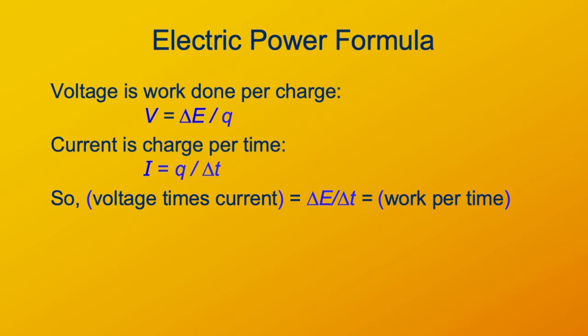Voltage times current. We have the charge part cancelling out, because we have charge in the denominator, in voltage, and it's the numerator, in current. So the charge part just cancels out, and we have energy per time, or work per time, which is the power.